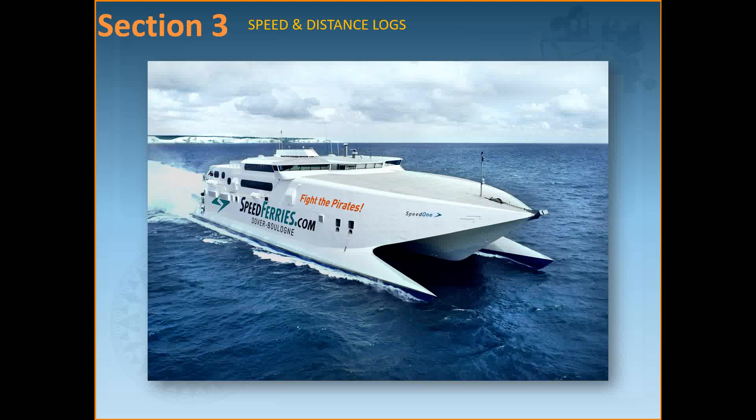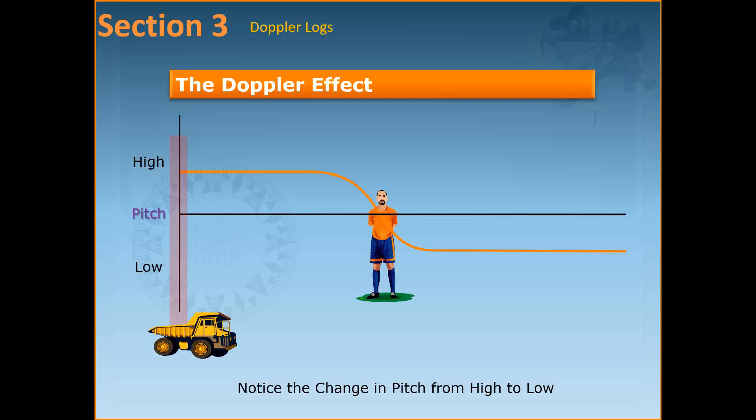Before we go into the Doppler log we must understand the principle — the Doppler effect or Doppler shift. The effect is best shown by this example: imagine the pitch of the whistle of a train coming towards you is higher than when the train is going away from you. As the train passes you, the whistle note drops from higher to lower. The note heard by the listener is higher than transmitted from an approaching source and lower than transmitted from a receding sound source.